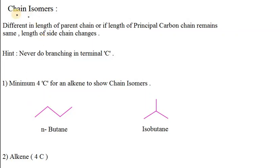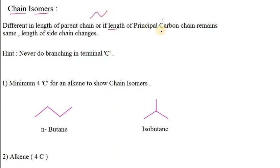In this video, we gonna learn about chain isomers. There is a difference in length of parent chain, or if the length of the principal carbon chain remains the same, then the length of the side chain changes. These are called chain isomerism — either the principal carbon chain or parent chain length changes, or if the principal carbon chain remains the same, the length of the side chain changes. That is also in the category of chain isomers.